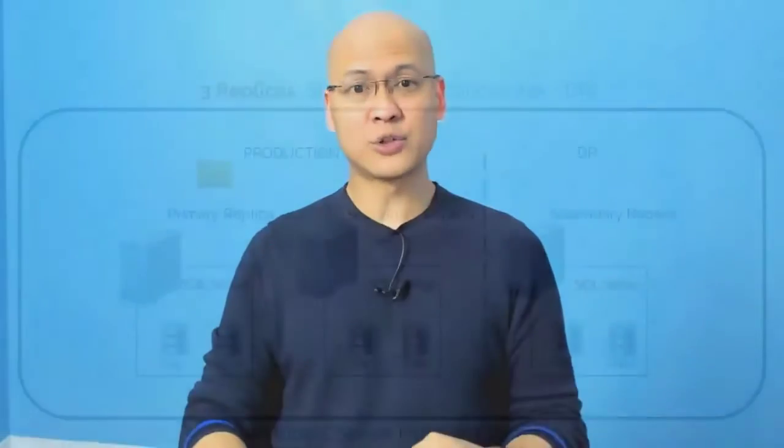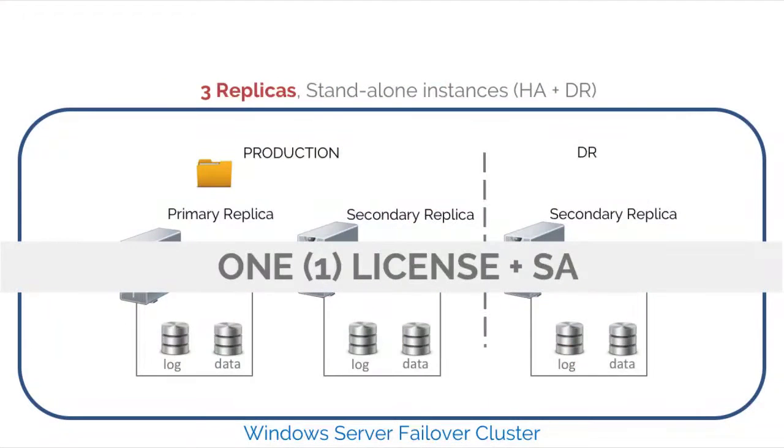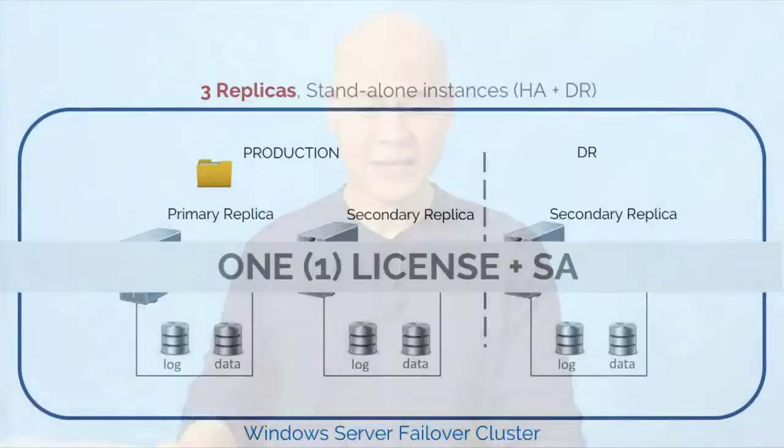With today's software assurance, this only requires one SQL Server license and software assurance. That's half the cost. Prior to this new benefit, you were paying twice as much when you don't even use a secondary replica for anything other than DR. Microsoft is now giving you the usage rights to run a secondary replica in DR with the new software assurance benefits.